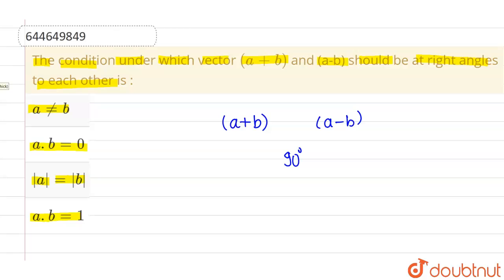Now we know that whenever two vectors are right angled to each other, then their dot product is zero. In this case, dot product of these vectors will be (a+b) dot (a-b).